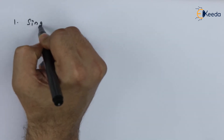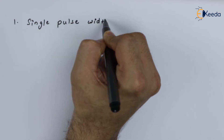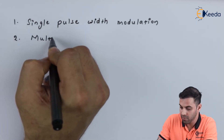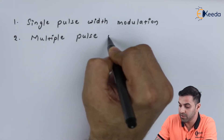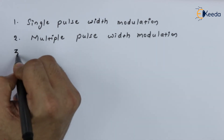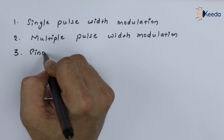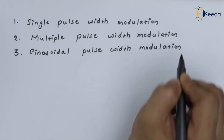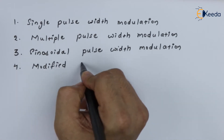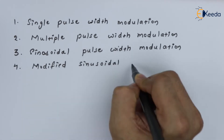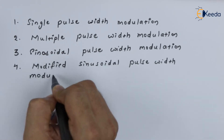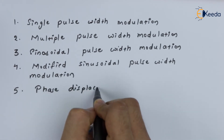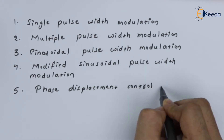Number 1 would be single pulse width modulation. Number 2 would be multiple pulse width modulation. Number 3 would be sinusoidal pulse width modulation. Number 4 is modified sinusoidal pulse width modulation. And the last technique would be phase displacement control method.